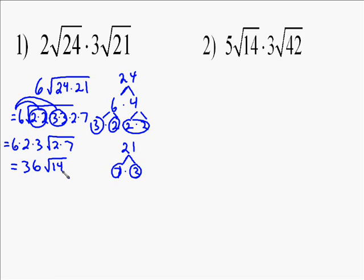For number 2, we're going to do the same thing. We multiply the 5 times the 3 to get 15. Instead of having to multiply 14 times 42, we're going to factor 14 and 42 separately. 14 factors very easily to 7 times 2. 42 we factor to 6 times 7, and then we factor 6 to 3 times 2.